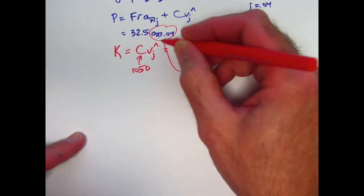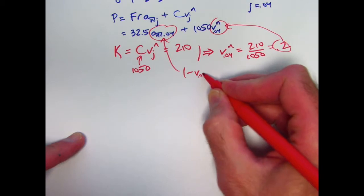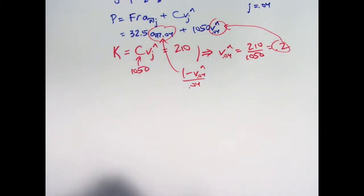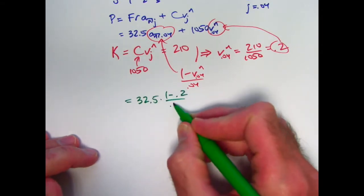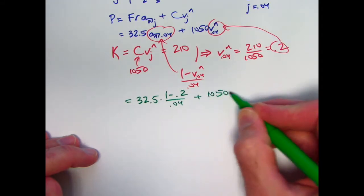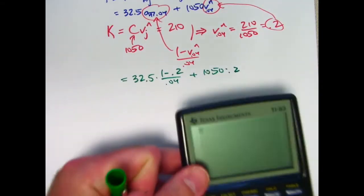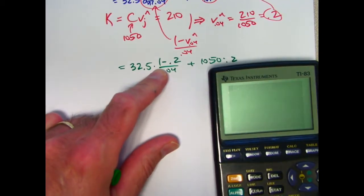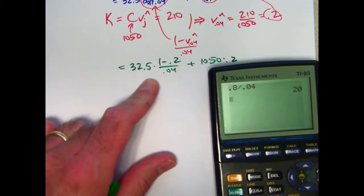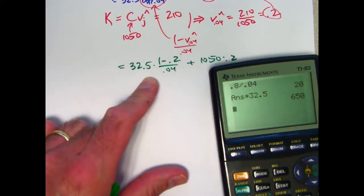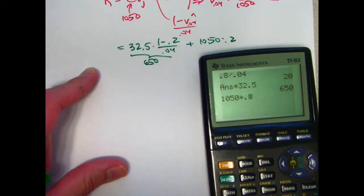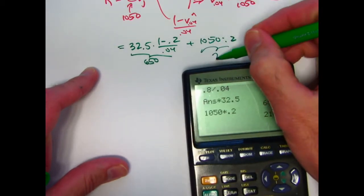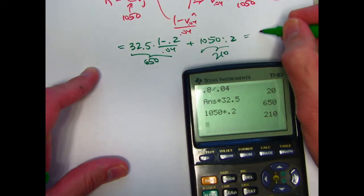So we can plug that in. And this is going to be 1 minus V sub 0.04 to the N over 0.04. So what do we get? We're going to get 32.5 times 1 minus 0.2 over 0.04 plus 1,050 times 0.2. 1 minus 0.2 is 0.8. 0.8 divided by 0.04 is 20 times 32.5 is 650. And then 1,050 times 0.2 is 210.